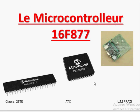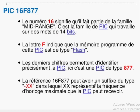Bonjour mes chers élèves, aujourd'hui nous allons voir le microcontrôleur 16F877. Le 16 indique le type de la famille midline, une famille qui travaille sur 14 bits. Le F indique le type de la mémoire flash utilisée, et le 877 indique la référence de ce circuit, son identification. On peut ajouter d'autres chiffres pour indiquer la fréquence maximale.